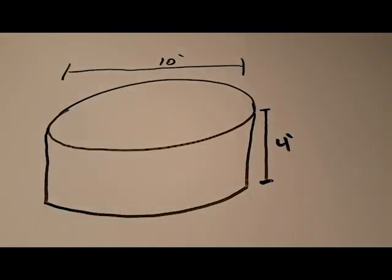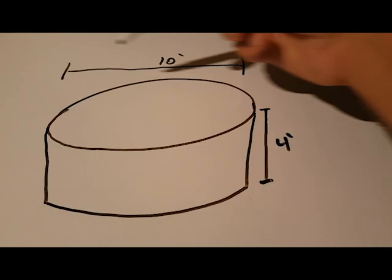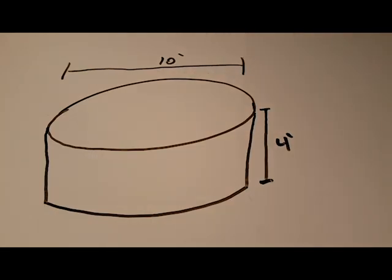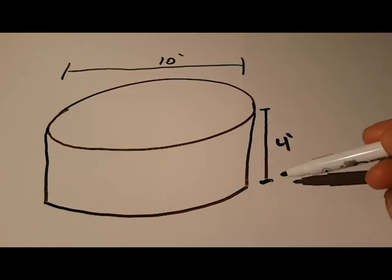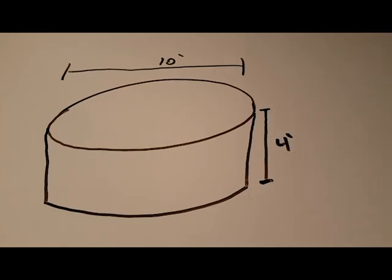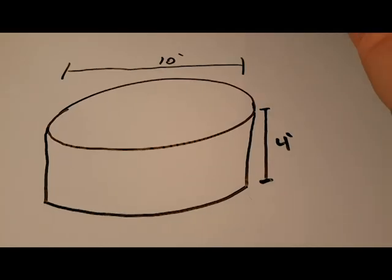If you want to find the volume of a circular pool, we're going to start with our diameter. This one is 10, so it's a 10-foot round pool, and our height is 4 feet. So we have a 10 by 4, more or less, above ground pool, or it could be in ground.